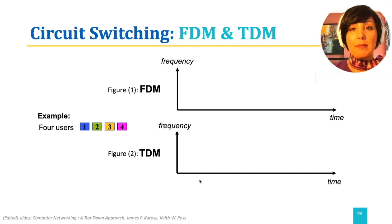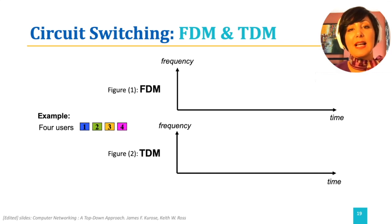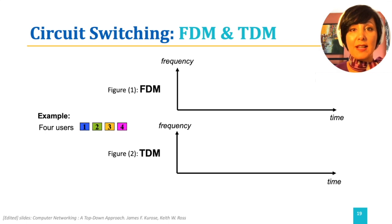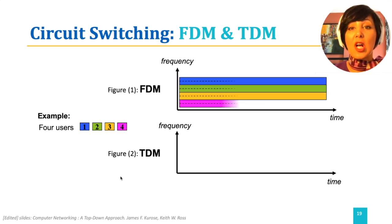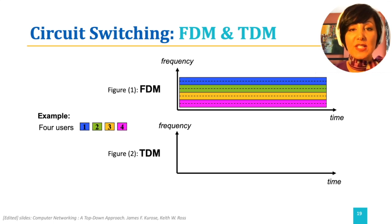Let's explore TDM and FDM with an example. Assume we have four users, indicated by numbers 1 to 4 and color-coded with blue, green, yellow, and pink respectively. Assume we have a circuit-switched link and we want to examine frequency and time allocation in either FDM or TDM scenarios. If we are using FDM, we have to assign a specific frequency band to each user. This frequency band is dedicated to that user all the time during the reserved connection time. As shown in Figure 1, with different colors allocated along the frequency axis, the same frequency is kept for each user for the whole time the circuit is reserved.